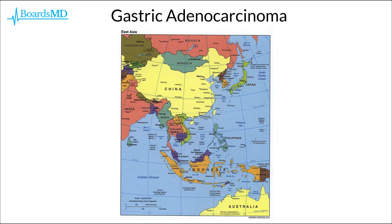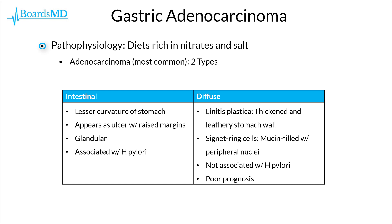Gastric adenocarcinoma is classically going to present on examination questions as a patient from East Asia. In East Asia, we have China, as well as North and South Korea, as well as Japan. Therefore, vignettes for gastric adenocarcinoma will often have a patient who is an immigrant from one of these three key regions in East Asia.